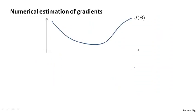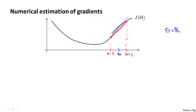Here's the idea. Consider the following example. Suppose I have the function J of theta and I have some value theta. For this example, I'm going to assume that theta is just a real number, and let's say I want to estimate the derivative of this function at this point. The derivative is equal to the slope of the tangent line. I'm going to compute theta plus epsilon — a value a little bit to the right — and theta minus epsilon, look at those two points, connect them by a straight line, and use the slope of that little red line as my approximation to the derivative, which is the slope of the tangent line.